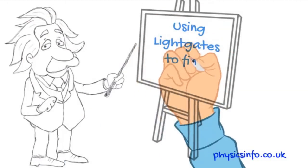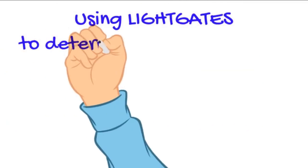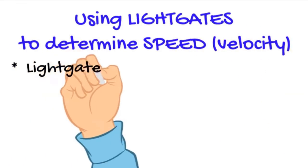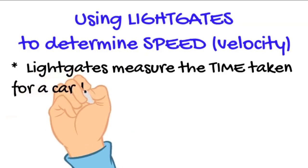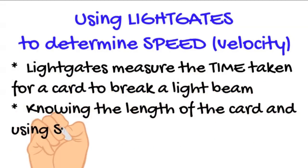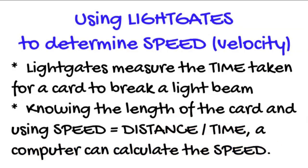Using light gates to find speed, or more properly, velocity. Light gates can be used to measure the time taken for a card to break a light beam. Knowing the length of the card, and using speed equals distance over time, a computer can calculate the speed.